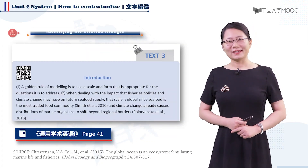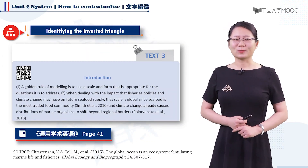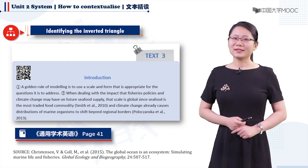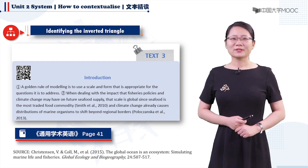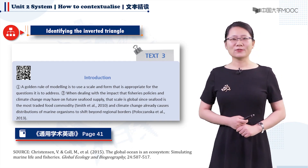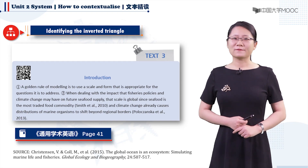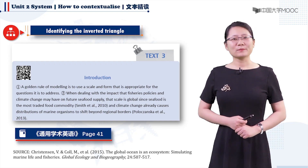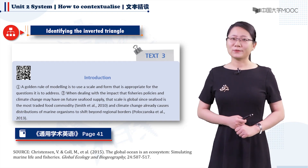Text 3 is taken from the paper entitled 'The Global Ocean is an Ecosystem: Simulating Marine Life and Fisheries,' published in the journal Global Ecology and Biogeography in 2015. It features a typical inverted triangle structure and provides relevant background information for readers to understand the topic.